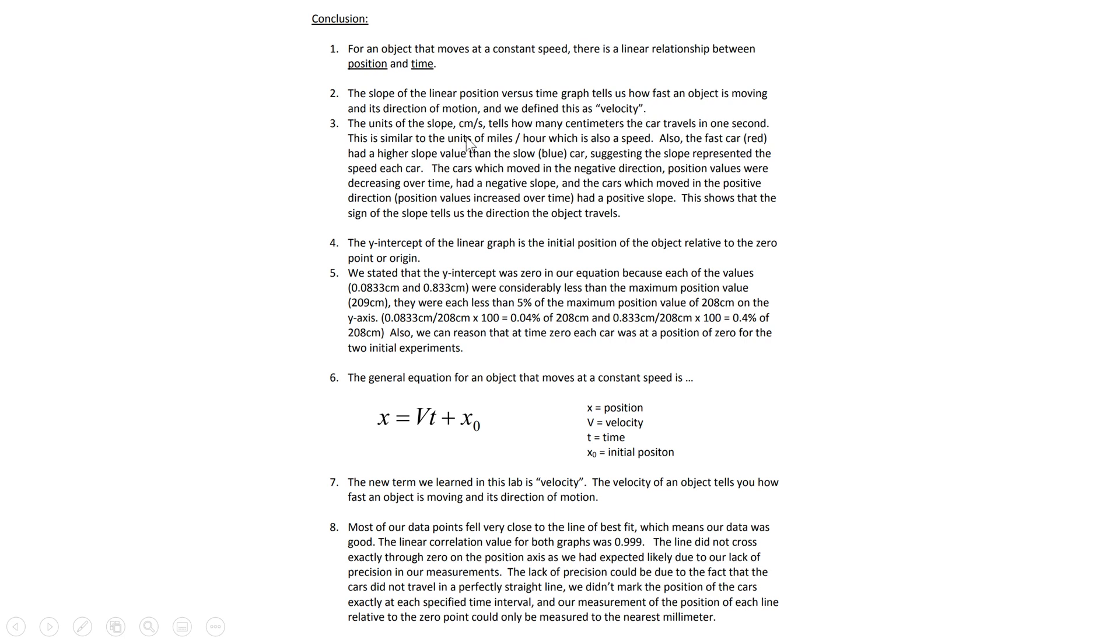Then for number three, you justify how you came to that conclusion. And in this case, we just talk about the units of the slope. We're centimeters per second. So a length over a time, which indicates an idea of fastness. You can group two and three together as sort of one little mini paragraph for yourself. But you need to state what the slope is going to be.